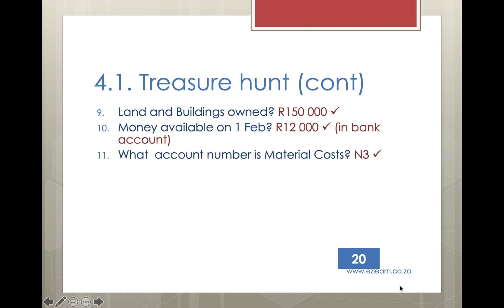Question 11: What account number has been allocated to material costs? The account number allocated is N3. To find this, look at the material costs account in the general ledger — at the top on the far right-hand side, you can see N3. The allocation of account numbers is something the business can choose themselves. It could be a number, a series of letters, or for example E3 to indicate an expense. It is simply a system chosen for whatever suits the business best, so they can easily find and refer to accounts.